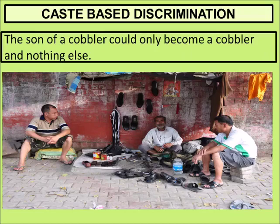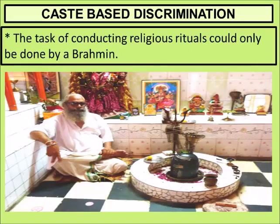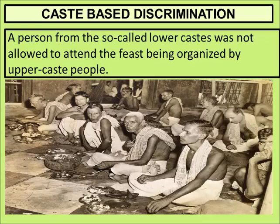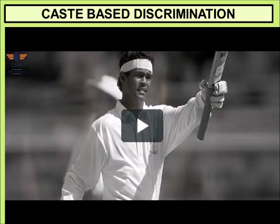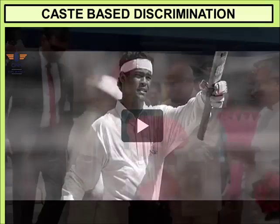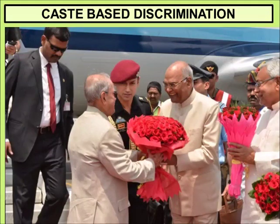People think the son of a cobbler could only become a cobbler, and that all religious rituals can only be conducted by a Brahmin. A person from the lower caste cannot eat with Brahmins. But consider Vinod Kambli — a very good cricketer and friend of Sachin Tendulkar — he is also from the Dalit community of Maharashtra. Your talent is not dependent on your caste. Ramnath Kovind is from a Dalit community, but with his talent he reached the top position of India — the President of India. When you have talent, no one can stop you from reaching the top.